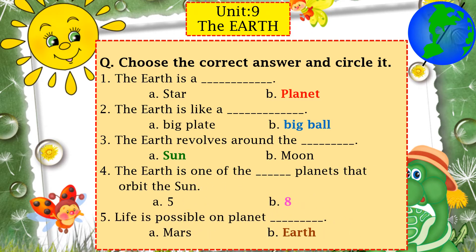Today we are going to do 'choose the correct answer and circle it.' You can do it in your science notebook or you can take the printout — I have sent the PDF on WhatsApp. Take out your science notebook, draw the margin line, write down the date, day, and Unit Number 9 'The Earth.' The question is: choose the correct answer and circle it.